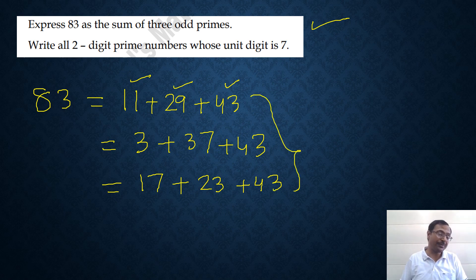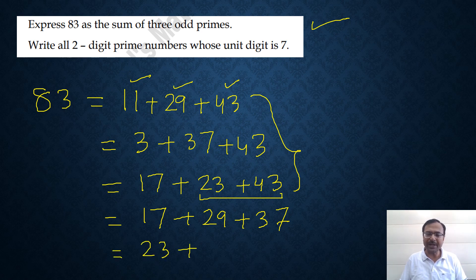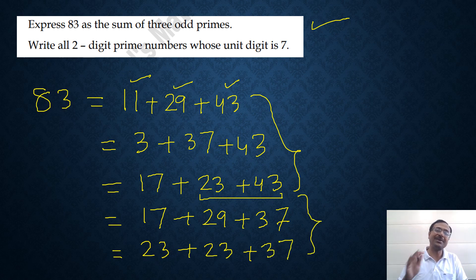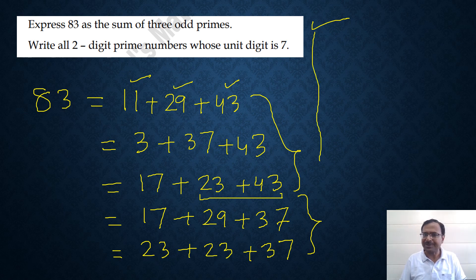And then if you use 17 and split these two into 29 and 37, this also gives you 83. And I'll tell you one more - use 23 two times. This gives you 46 and 37 gives you 83. So these are only some of the ways in which 83 can be expressed as a sum of three prime numbers. There are so many other ways. I will wait for your comments for this particular question.